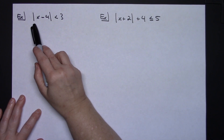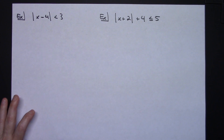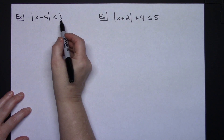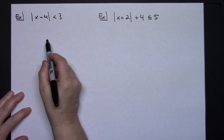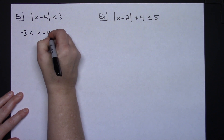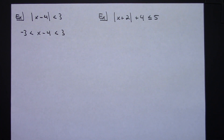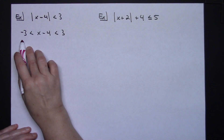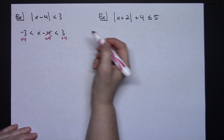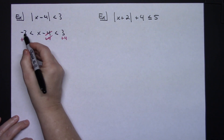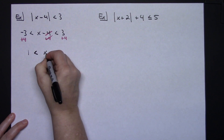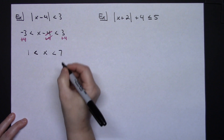For Case 1, we have absolute value bars that are isolated and it's less than 3 — a positive number. Since it's less than, I know it's an AND. I set it up as: negative 3 is less than x minus 4 is less than 3. To solve for x, I add 4 to all three parts. Negative 3 plus 4 gives 1, and 3 plus 4 gives 7.